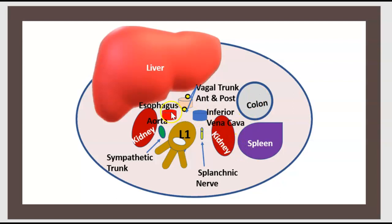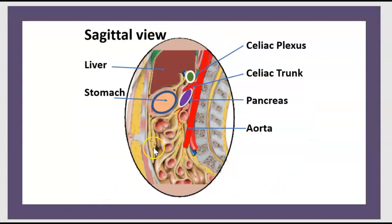Here is the esophagus with the vagal trunk, anterior and posterior. Here is the aorta and the inferior vena cava. The sympathetic trunk is shown in green, and the splanchnic nerve is shown in yellow. In a sagittal view: this is the liver, this is the stomach, this is the aorta, this is the celiac trunk, and this is the pancreas.